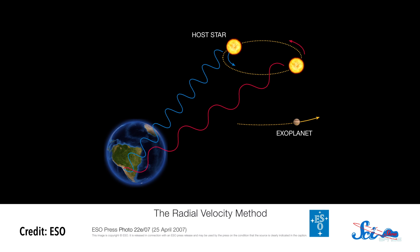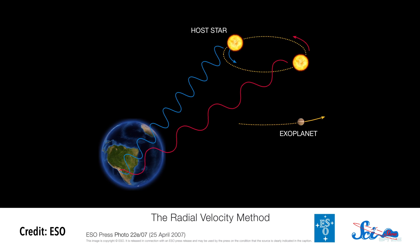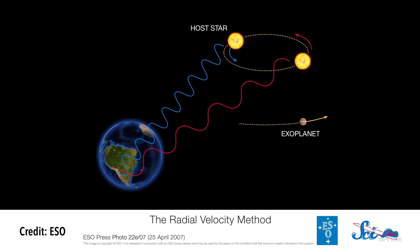It's taken a while to get a good idea of how common it is for a star to have planets around it, because we just didn't have enough data. For a long time, we mainly detected exoplanets using the radial velocity method, where the gravitational pull from a planet orbiting a star makes the star wobble slightly, which changes the wavelength of the light we detect from Earth.